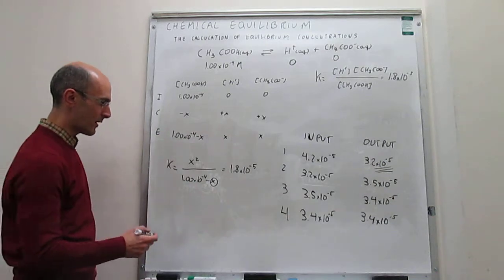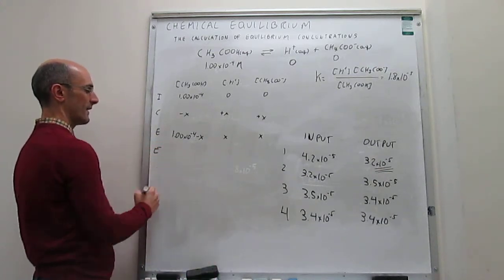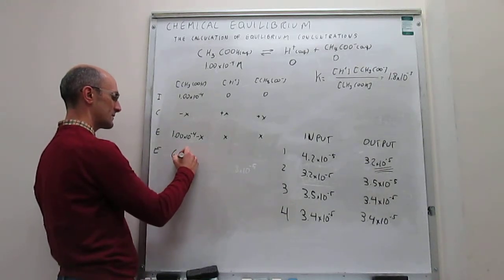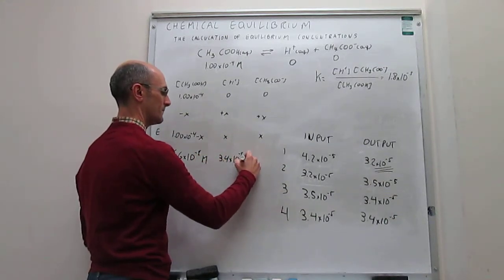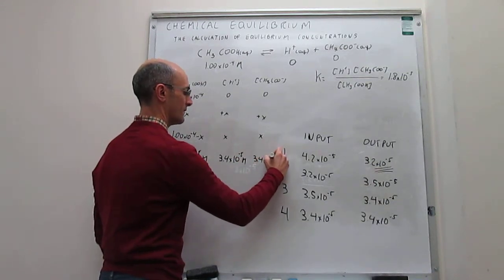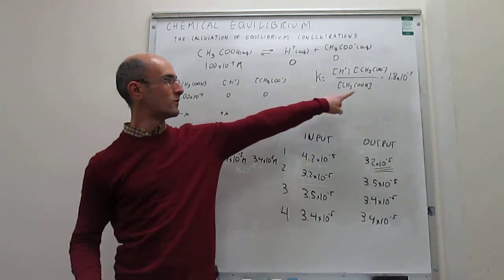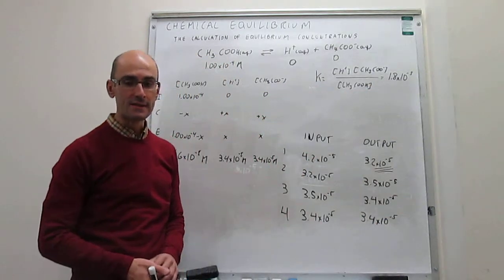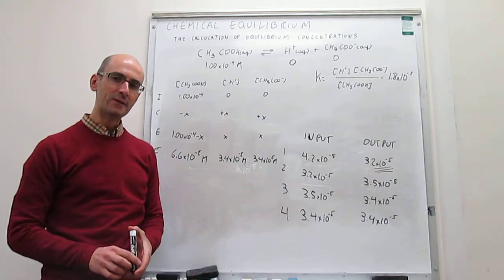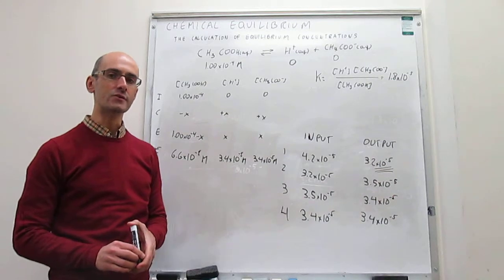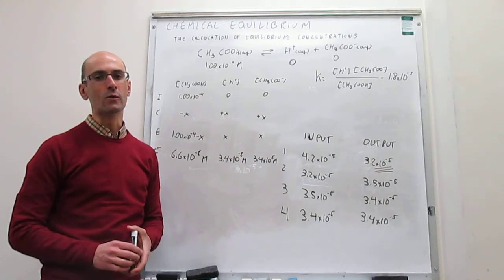With x = 3.4×10⁻⁵, we return to the equilibrium row of the ICE diagram. The equilibrium concentrations are: acetic acid = 6.6×10⁻⁵ M, protons = 3.4×10⁻⁵ M, and acetate = 3.4×10⁻⁵ M. Plugging these back into the equilibrium expression recovers the equilibrium constant, confirming our iteration method is correct. In this video we introduced solving equilibrium problems via iteration — a useful alternative to the quadratic formula for calculating concentrations at equilibrium.